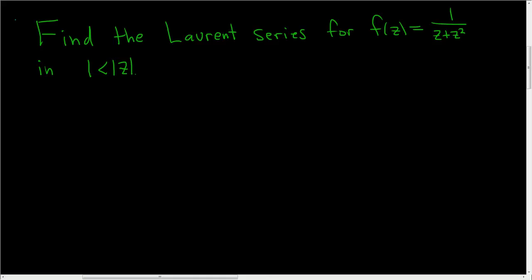Find the Laurent series for f of z equals 1 over z plus z squared in this region here. So let's go ahead and work it out. There is a formula that we're going to be using in this problem.